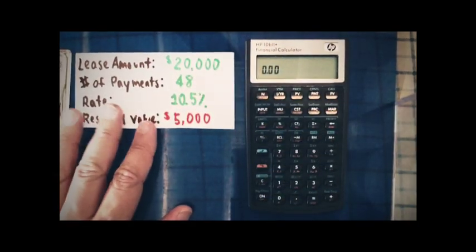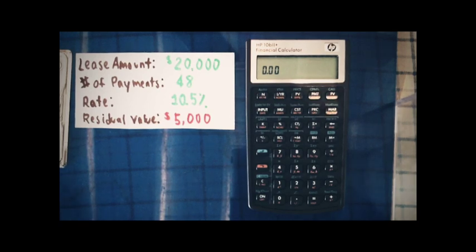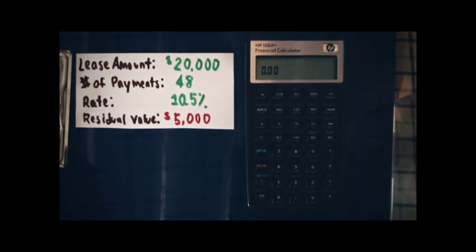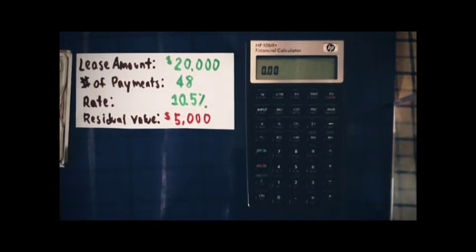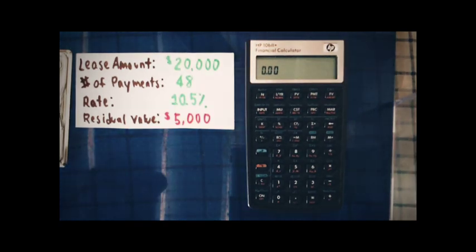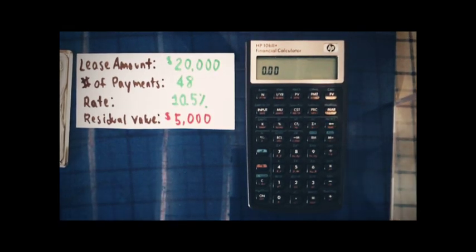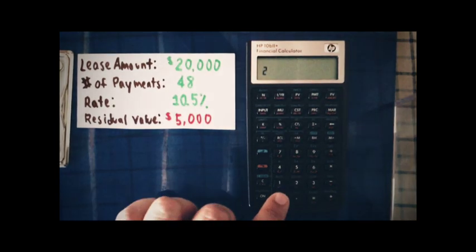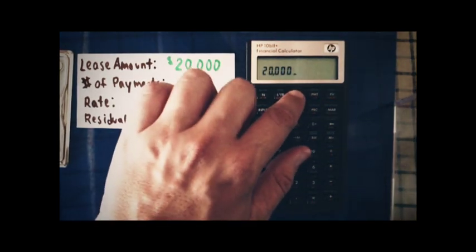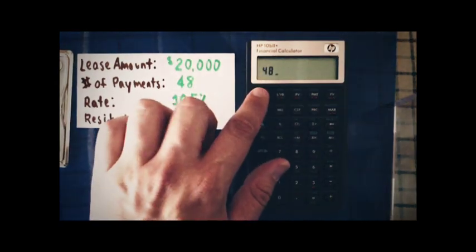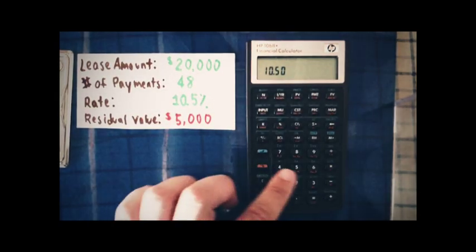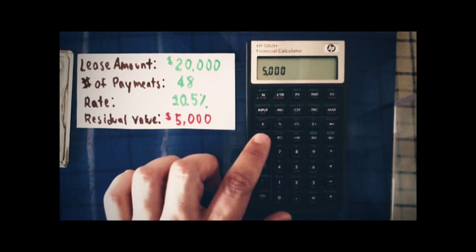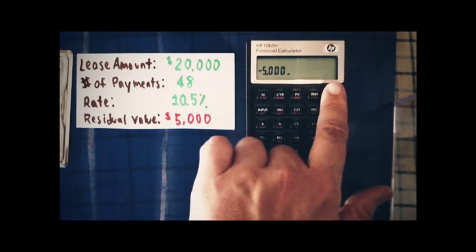Our second example: we're going to lease a luxury car valued at $20,000. The lease is going to run for 48 monthly payments at 10.5%, and the residual value of the car is $5,000. I'm using an HP 10B2 calculator to demonstrate this problem. I'm going to enter $20,000 into present value, 48 into N, the rate at 10.5%, and $5,000 as a negative residual value into future value.